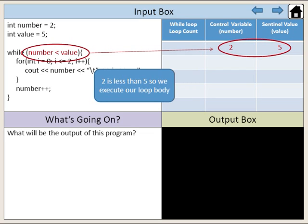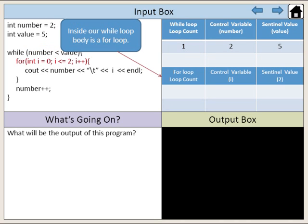2 is less than 5, so we execute our loop body. Inside our while loop body is a for loop.